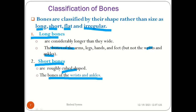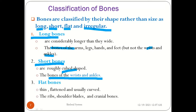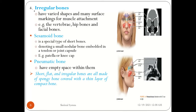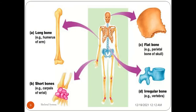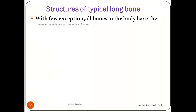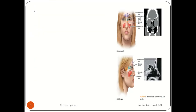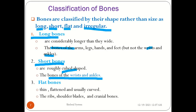Ankle bones are tarsal bones; there are seven ankle bones and eight wrist bones in total.